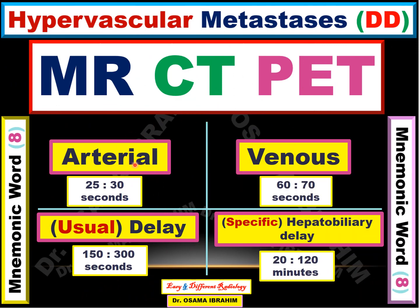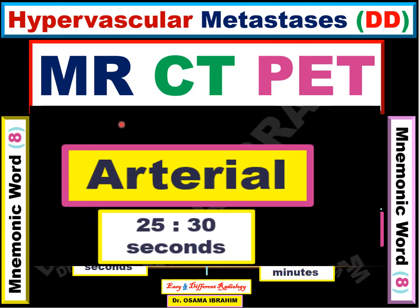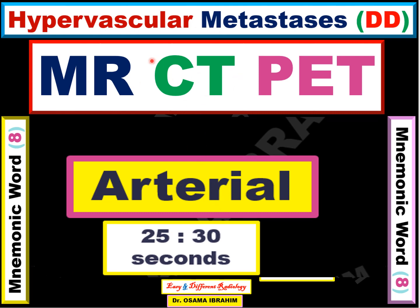I would like to mention what is the meaning of hypervascular metastasis. There are different phases after injection of contrast. Imaging after 25 to 30 seconds is called the arterial phase. After 60 to 70 seconds is the venous phase. The delayed phase is after 150 to 300 seconds, and this specific phase is for hepatobiliary imaging for specific lesions in the liver. What I talk about today for this differential diagnosis is the lesions which take contrast during the arterial phase after 25 to 30 seconds — this is what is called hypervascular metastasis.